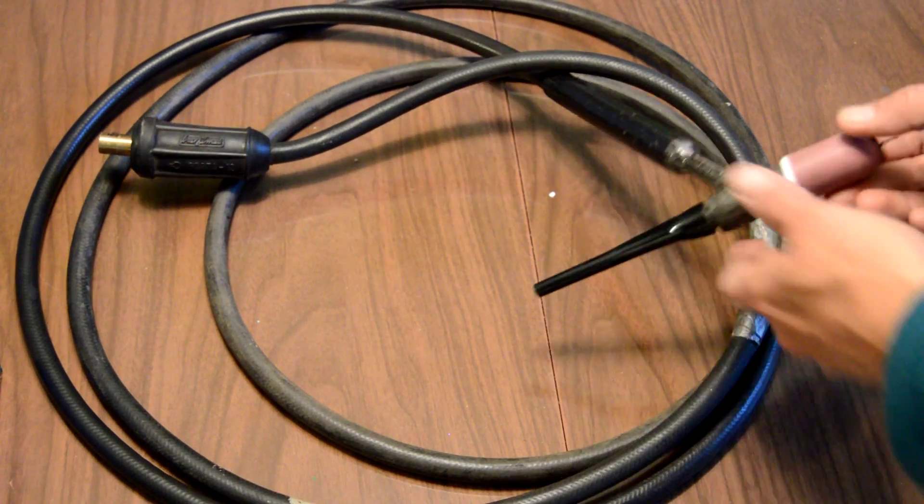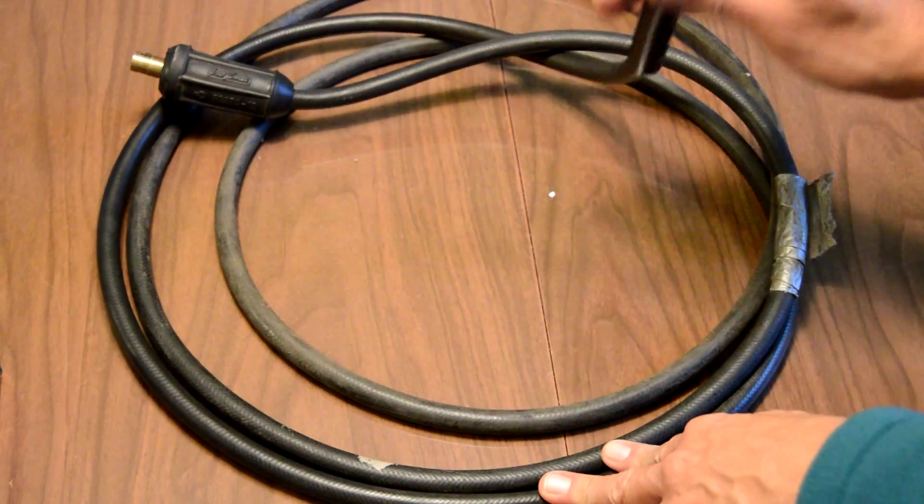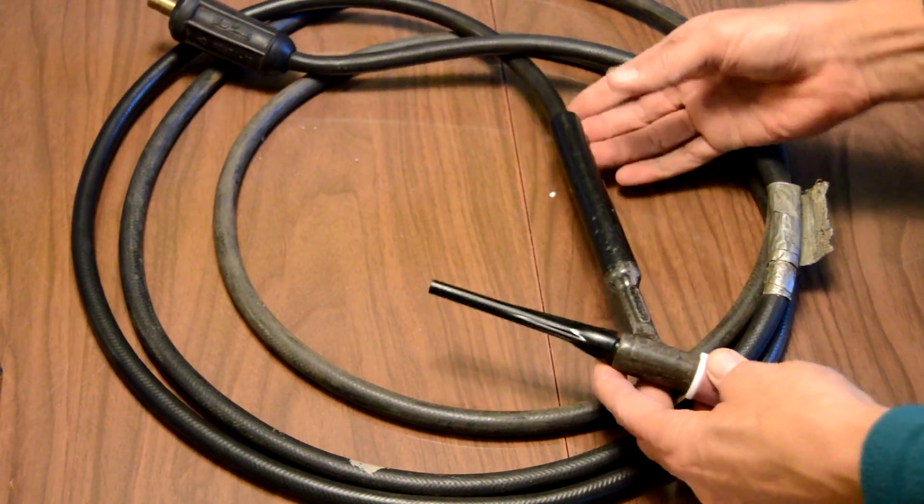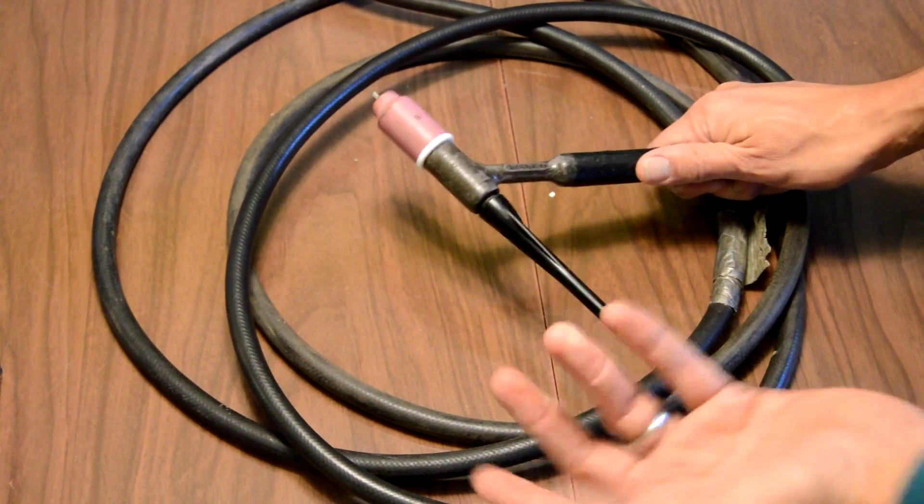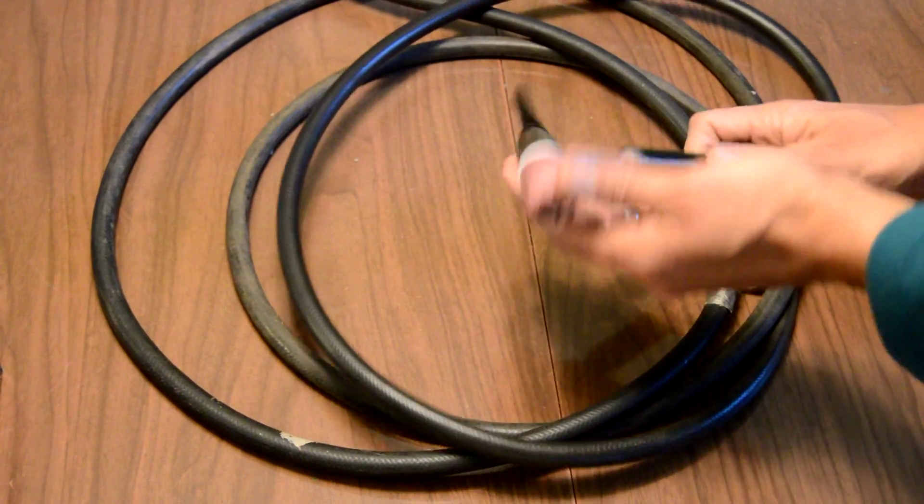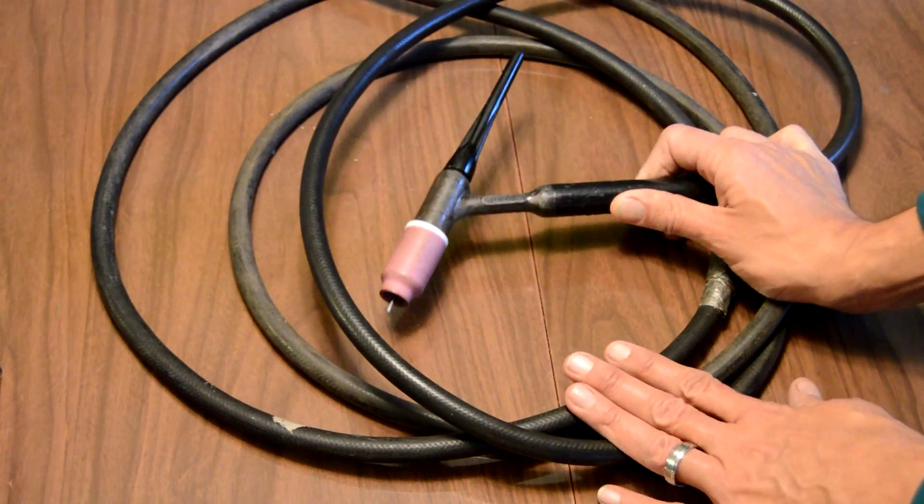Okay, just a quick video here. I've got this, my current TIG torch. It came originally with my welder, I believe. It's a Heliarc HW 17, so it's a 17 series torch.